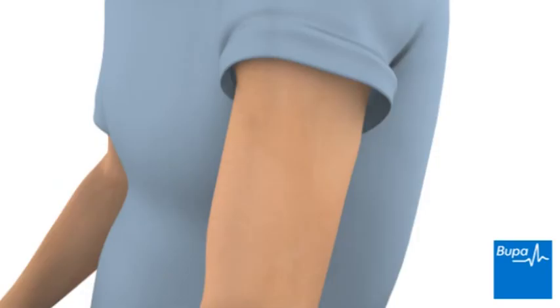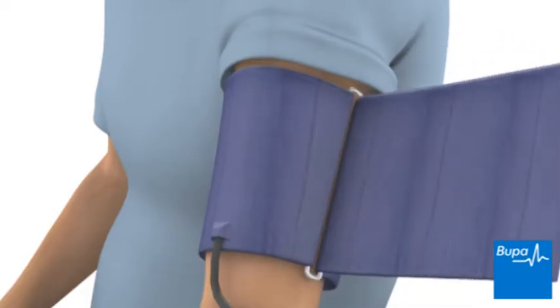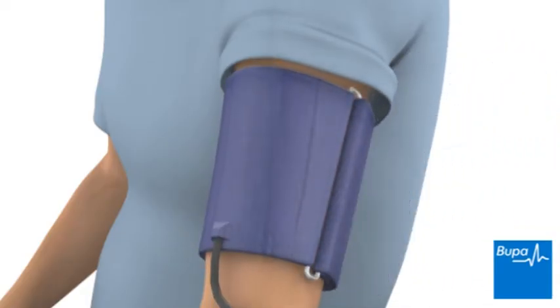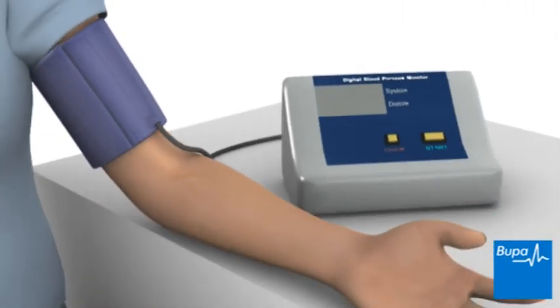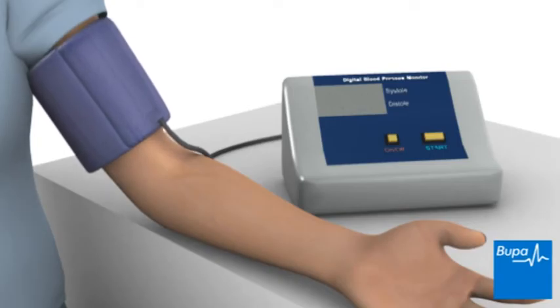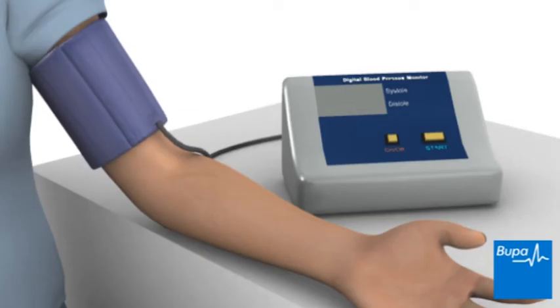Here we see blood pressure being taken using a digital machine. The cuff will be wrapped around the top of your arm and fastened with Velcro. Your nurse or doctor will press a button on the machine to inflate the cuff. When the cuff is fully inflated and as it automatically deflates, a sensor in the cuff detects your pulse and converts this information into a measurement of blood pressure. This is displayed on the screen.